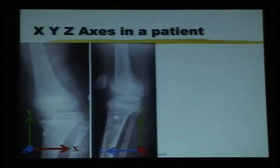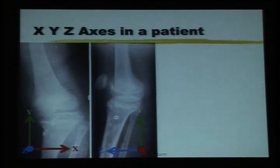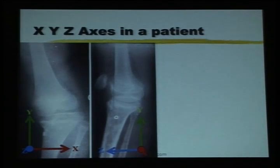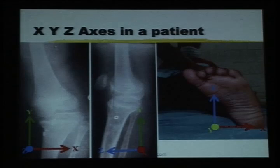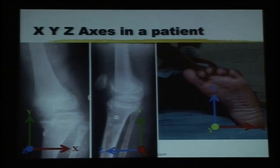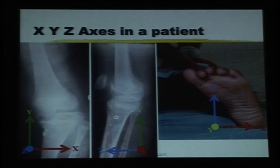When you do a lateral x-ray, it is the same y-axis which is up, but now the x-axis is facing you and the z-axis is going sideways. The only thing not seen on x-rays is rotation. Rotation in a limb is along the y-axis, which runs top to bottom.